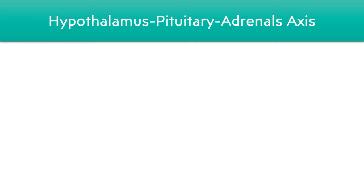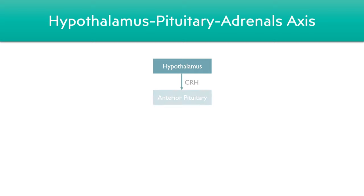To fully understand the short synactin test, it's important to review the hypothalamus-pituitary-adrenals axis first. We start off with the hypothalamus, which secretes a substance known as CRH, or corticotropin releasing hormone, which acts on the anterior pituitary gland to trigger the release of ACTH.